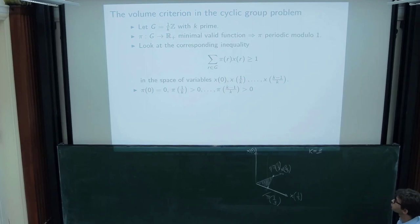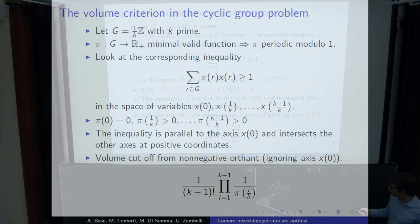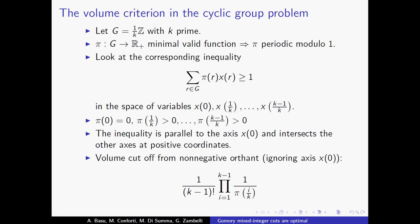The volume of this simplex is equivalent to minimizing the product of π(j/k) over all non-integer j/k in [0,1), since the volume formula involves the product of the inverses of these π values. So we want to find among all minimal valid functions π the one that maximizes the volume cut off, equivalently minimizes this product.